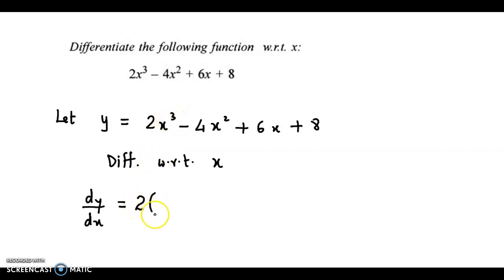Derivative of x cube is 3x square minus 4 times derivative of x square is 2x plus 6 times derivative of x is 1 plus derivative of 8. Now, 8 is a constant, so its derivative value is 0.